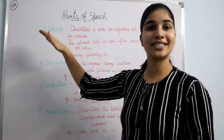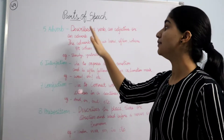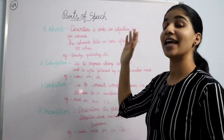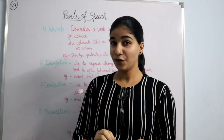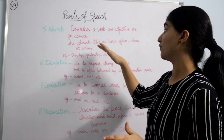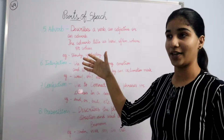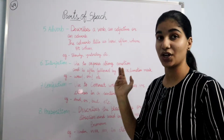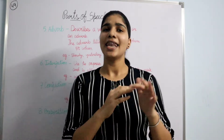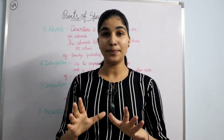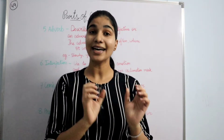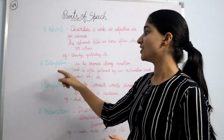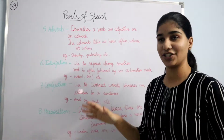First, what's an adverb? Adverb describes a verb, an adjective and an adverb. The adverb gives us the answer of these questions: how, often, where or when. Examples are slowly, yesterday, etc. Like in a sentence: last night I slept very well. Here 'last night' is an adverb.